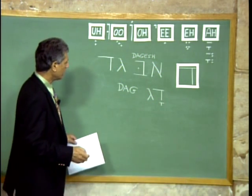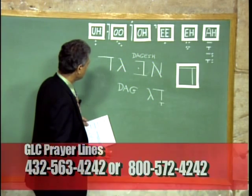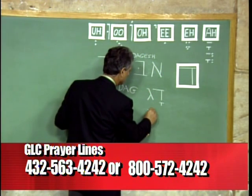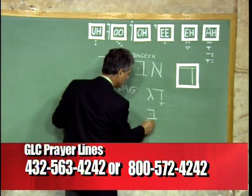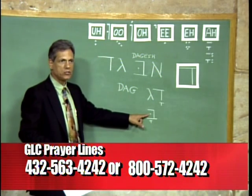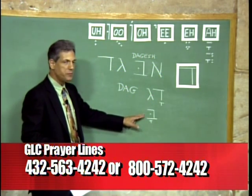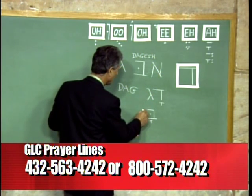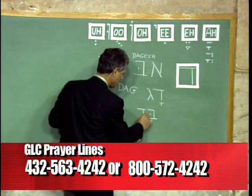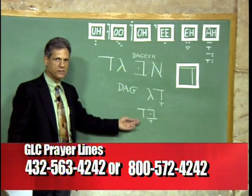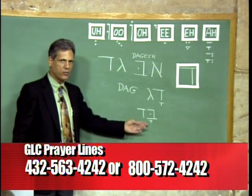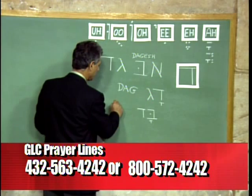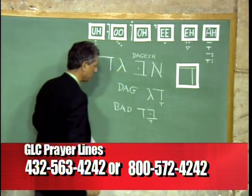Another interesting word: Bet with Dagesh — a B sound — and an A sound, giving BA, then Dalet next to it: we have BAD, transliterated like that.